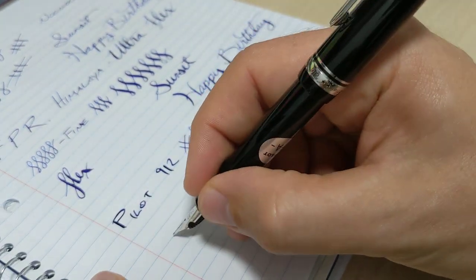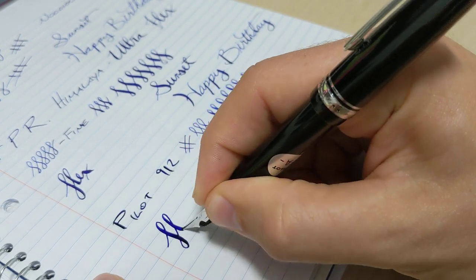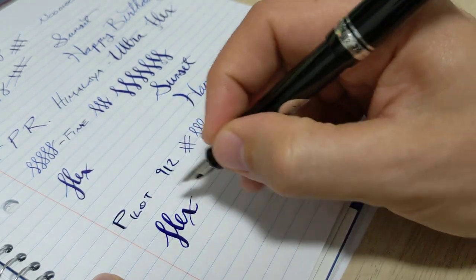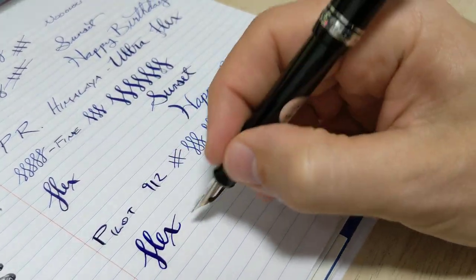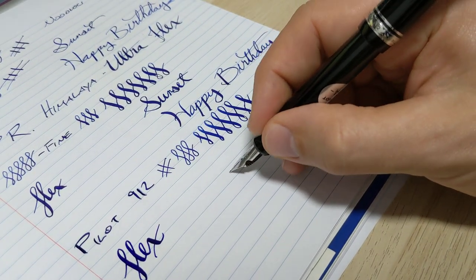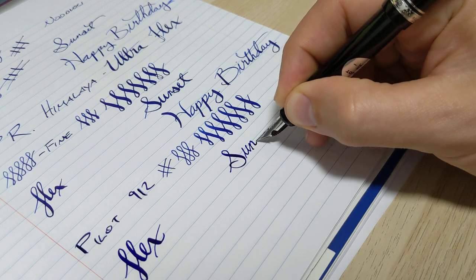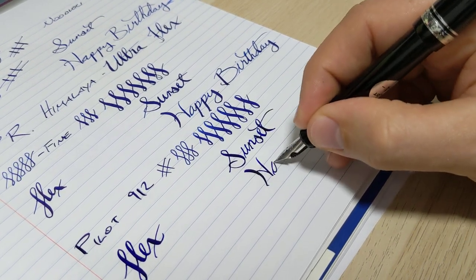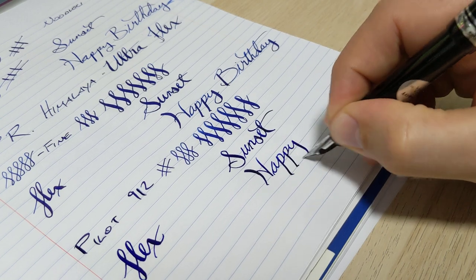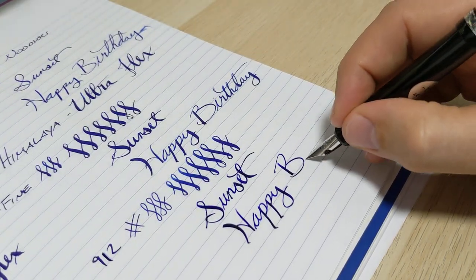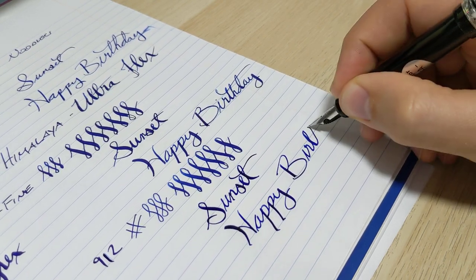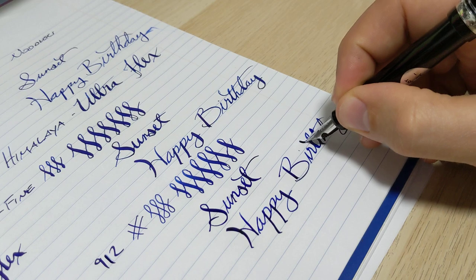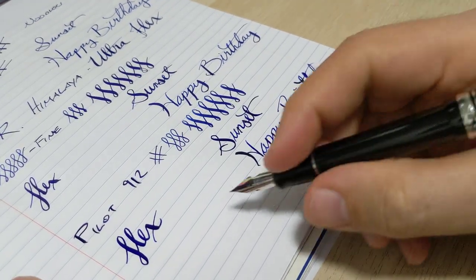But this definitely is really nice flex. I can also see why people get that Spencerian grind just to get the ideally want that super fine line on the up strokes so you can really have that line variation as well. But you can see this lays down a lot of ink. Let's finish the writing sample off. There we go, that's the end of it.